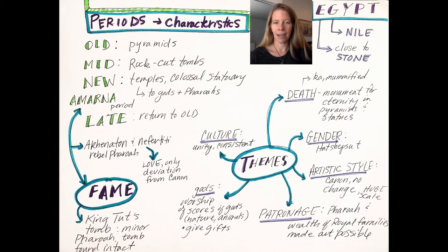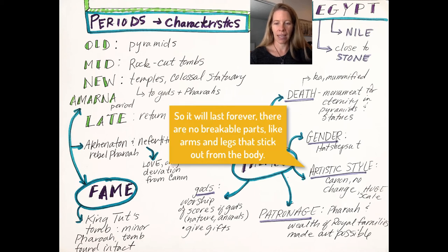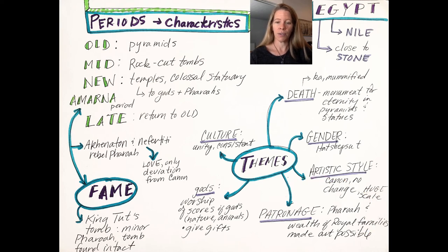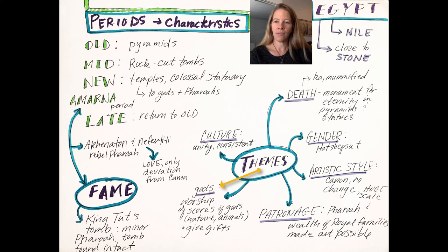As mentioned, the artistic style doesn't change a lot — the canon stays tried and true. We do have large-scale artworks, architecture, and sculpture. Patronage is something new here: we have a society stable enough to make artwork, so we see the pharaoh and the wealthy royal families making that possible. We see scores of gods shown in hieroglyphics and in artwork, with lots of gifts and food given to appease them.